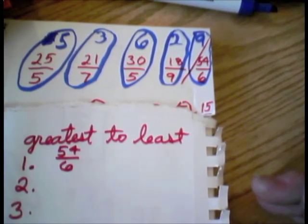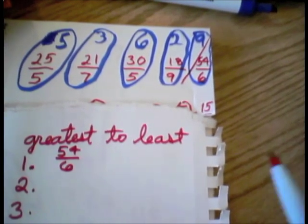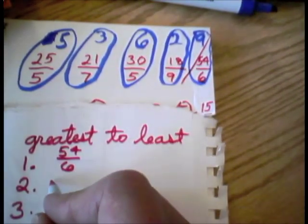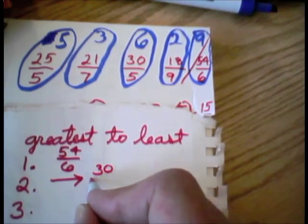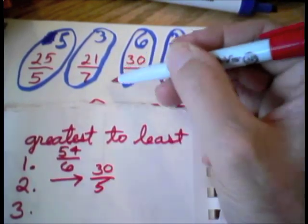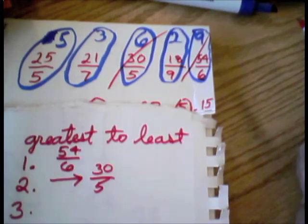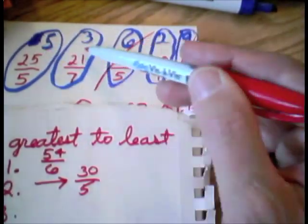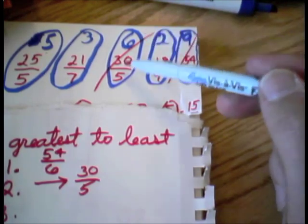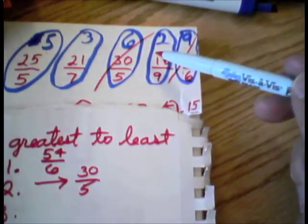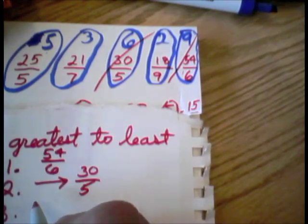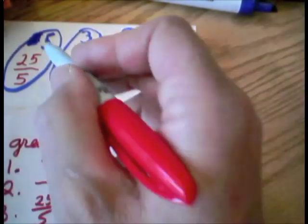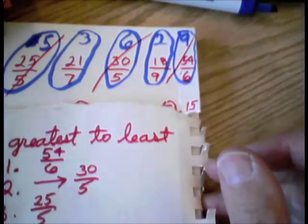Owen, what's the next biggest one? 30 5ths. 30, yeah, 6, 30 5ths. So, I'm going to draw a little arrow here so I don't get too crowded. 30 5ths. Process of elimination again, cross it out. Okay, Caden, out of all these, we're done with this one. We're done with this one. We've got this one, this one, and this one. Which is the biggest one? 25 5ths. Right, Caden, good. Process of elimination. We want to cross it out so we don't have to worry about it.